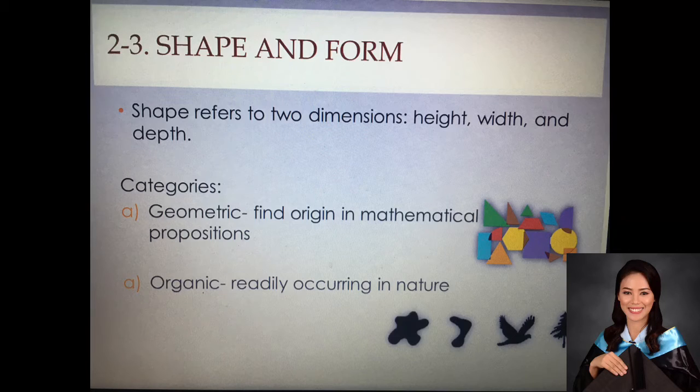There are two categories that can be used as a broad distinction for shape and form. First, we have the geometric. This shape finds origin in mathematical propositions. As such, its translation and use are often man-made. These shapes include squares, triangles, cubes, circles, spheres, and cones. As you can see in the picture on the right side, those are the shapes under geometric.